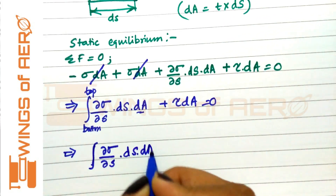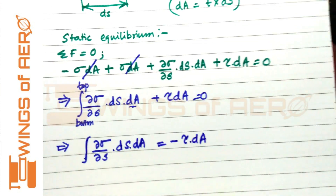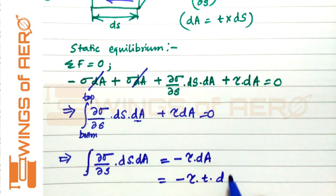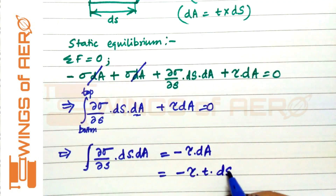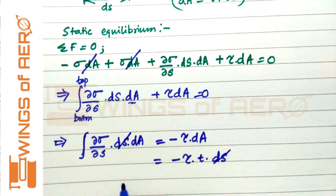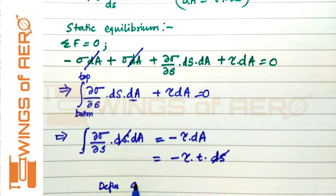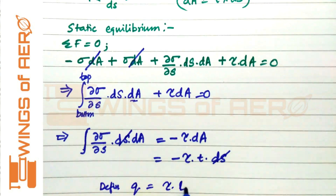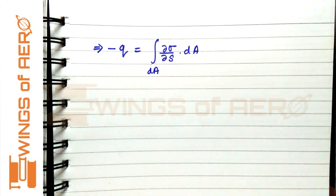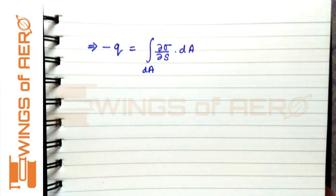Integrating dA equals minus tau into dA, which we can convert as minus tau·T·dS. This dS cancels, and recalling the definition of Q as tau·D, we can finally write: minus Q equals the integral of (∂σ/∂s)·dA.